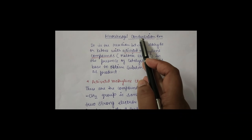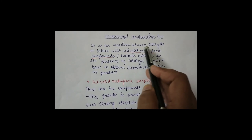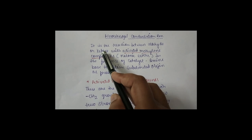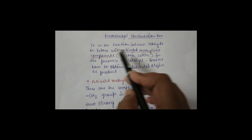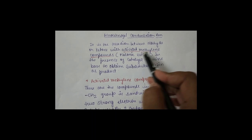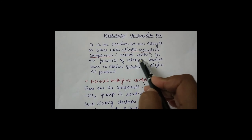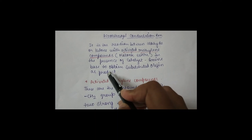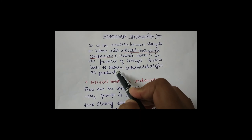Knoevenagel condensation reaction is the reaction between aldehyde or ketone with an activated methylene compound such as malonic ester in the presence of catalysts like an amine base to obtain a substituted olefin as a product.